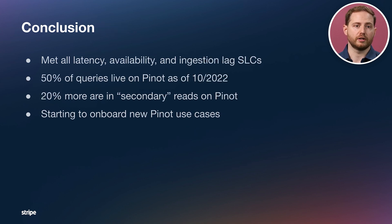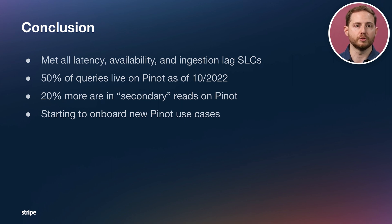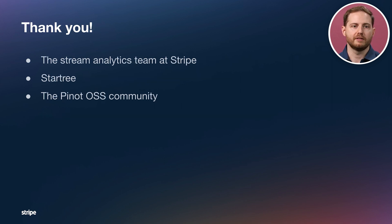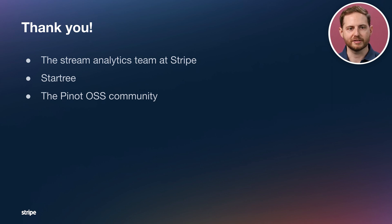In conclusion: we met all of our latency, availability, and ingestion SLCs. This is incredible, especially now that 50% of our queries are live on Pinot as of this month, with 20% more already on Pinot as secondary reads. Internally, we're looking to onboard new Pinot use cases: users wanting every single row of their data, dozens of dimension columns with varied aggregations, or upserts and deduplication with mutable real-time segments. I want to thank my team at Stripe for a year of hard work, StarTree for their advice and improvements to Pinot, and the Pinot open-source community for their engagement. Thank you all for watching.